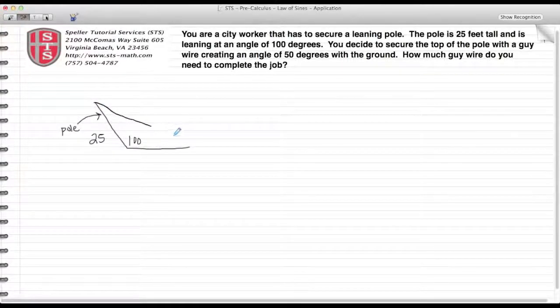...from the top of the pole and angle it to the ground. Alright, this here is the guy wire. We don't know the length of the guy wire so we'll just label that X, and we're also told that the angle that it creates with the ground is 50 degrees.